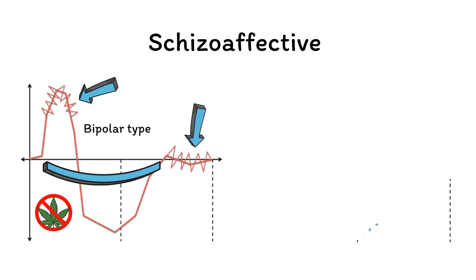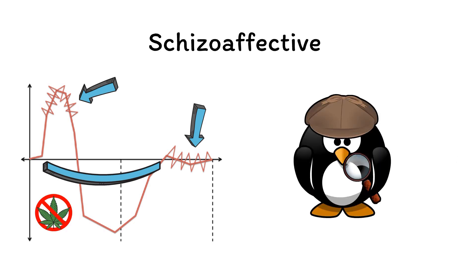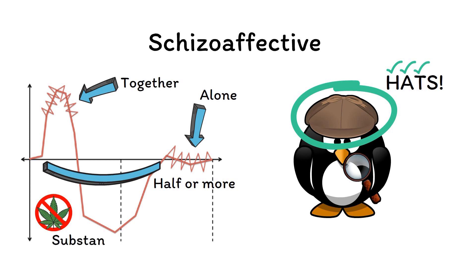Let's piggyback onto the schizo-detective mnemonic to keep these diagnostic criteria in mind. When you think of a detective, one of the first mental images that come to mind are those classic detective hats. This image will help you remember the four diagnostic criteria for schizoaffective disorder: specifically that half or more of the total time ill must be spent with mood symptoms, that psychotic symptoms must occur alone without mood symptoms, that mood and psychotic symptoms must occur together at the same time, and finally that you must rule out the effects of substances or other medical conditions.